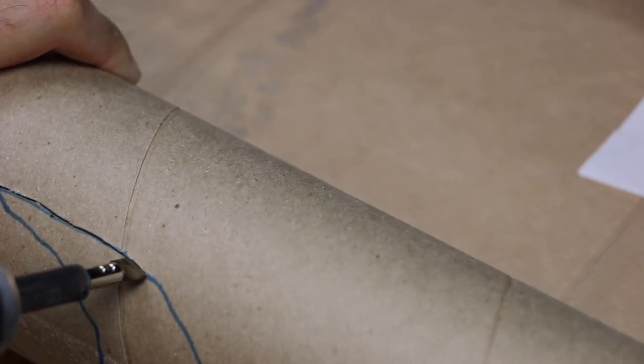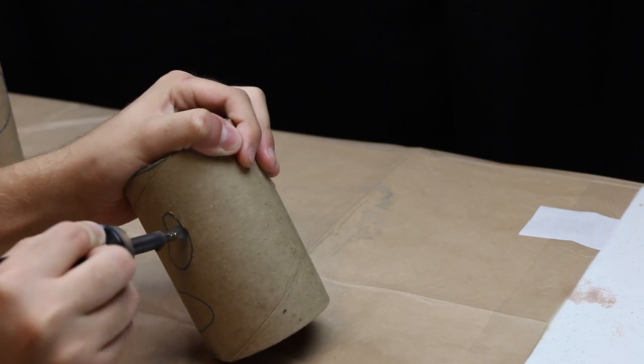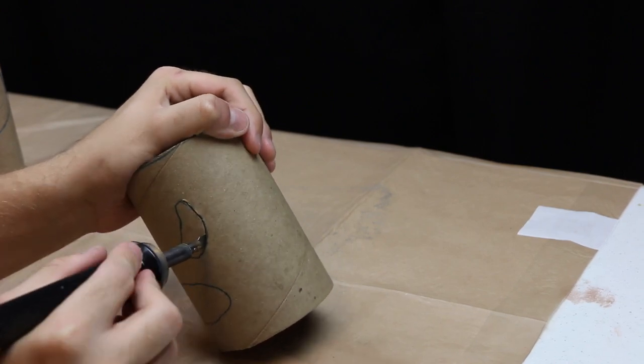Sort of just push it into the cardboard and slowly move it through. Let the heat and the sharpness of the blade do all the work. You do not want to do any sort of quick forceful sawing motions as this can cause it to jump out of the cardboard and cut you, which would not be good.